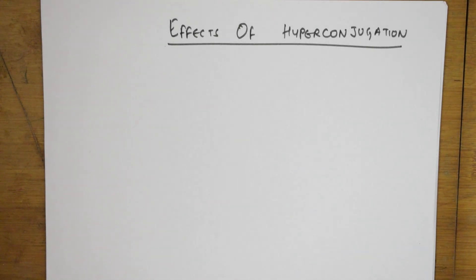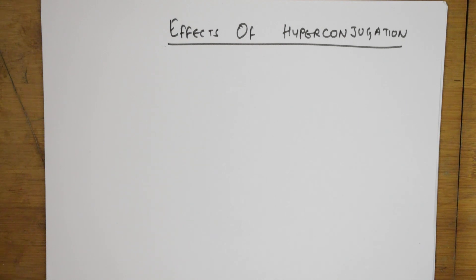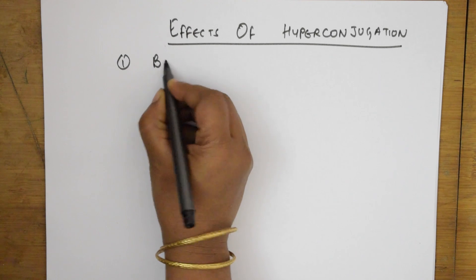Welcome back students to one more session of your general organic chemistry — effects of hyperconjugation. Today we'll be learning the hyperconjugation effects very clearly, taking different examples. I'll be teaching you the effects of hyperconjugation under different headings. Hope the concept of hyperconjugation is clear from the previous video. Any doubts, please send them in the comment section. Hyperconjugation can be used in learning the concept of bond length.